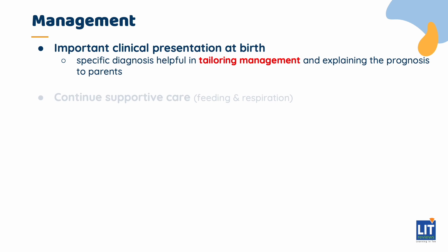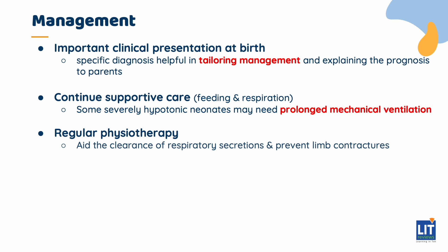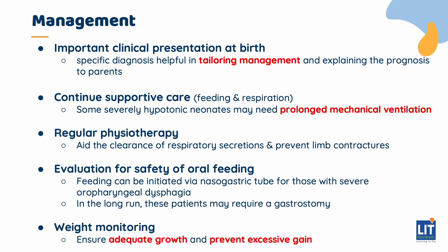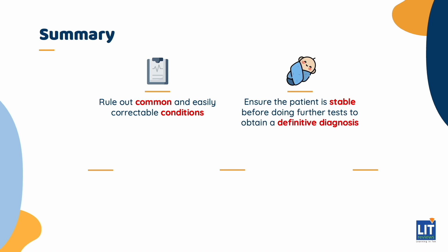It is very important to continue supportive care with regards to feeding and respiration. Some severely hypotonic neonates may need prolonged mechanical ventilation. Regular physiotherapy is needed to aid clearance of respiratory secretions and prevent limb contractures. They may also require a feeding evaluation by the speech therapist. Feeding can be initiated via a nasogastric tube initially, and these patients may require a gastrostomy long-term. Their weight should be closely monitored. Importantly, rule out common and easily correctable conditions first, and ensure the patient is stable before doing further tests for a definitive diagnosis.